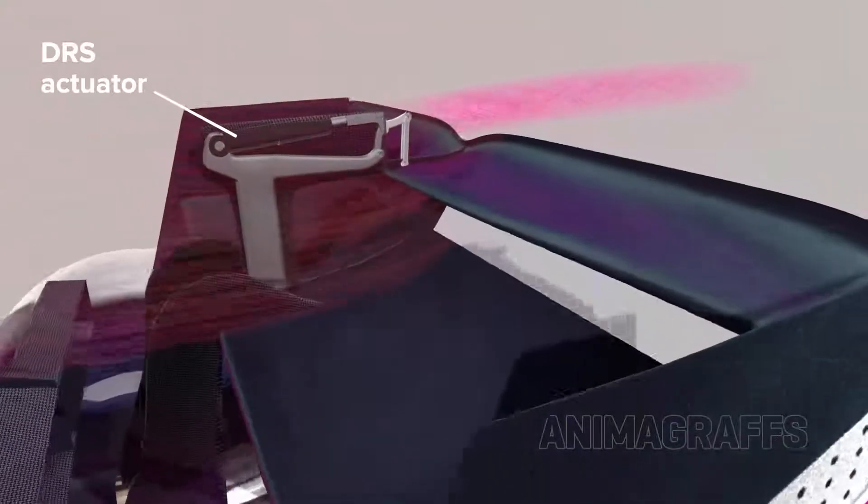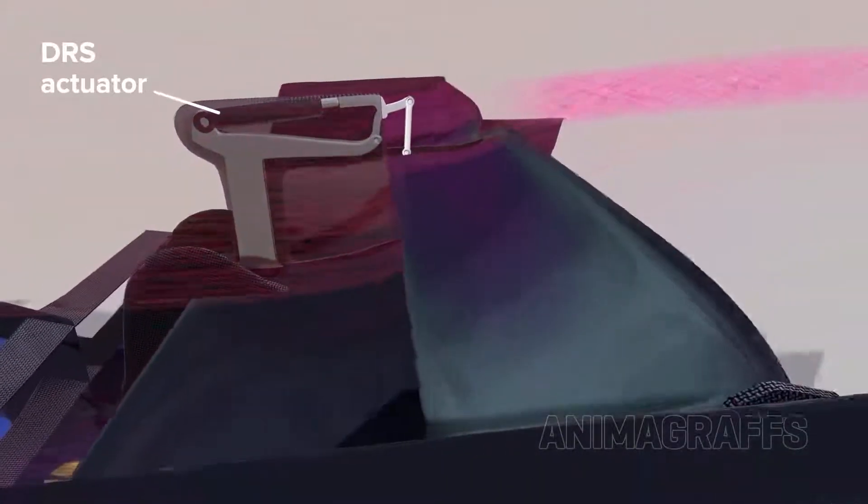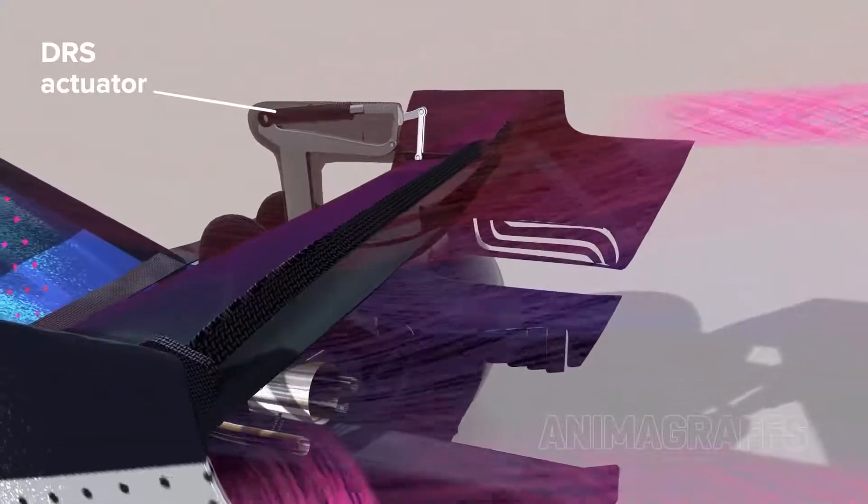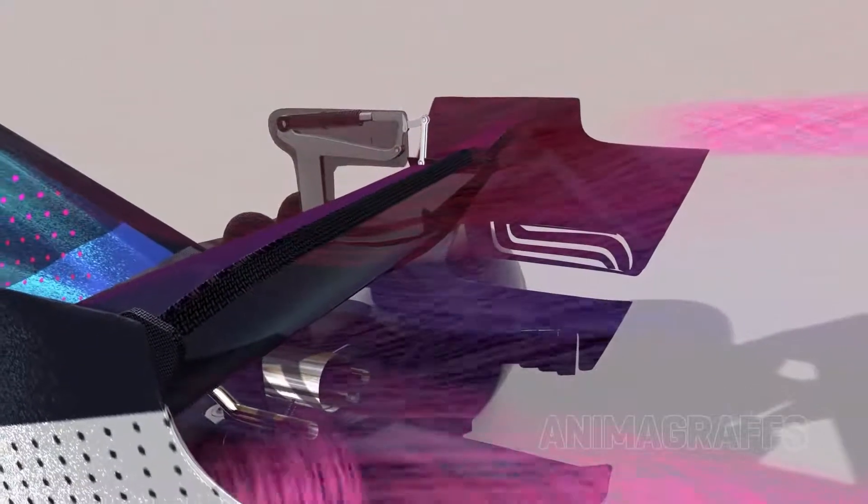A hydraulic actuator tilts a section of the rear wing when the drag reduction system, or DRS, is engaged, generating less rear downforce but allowing higher overall speed.